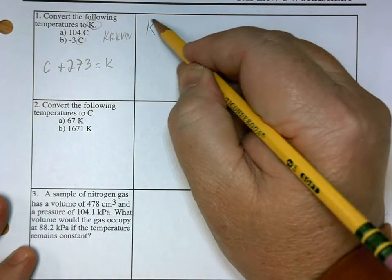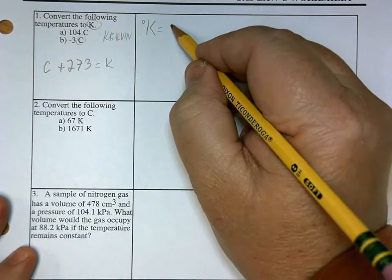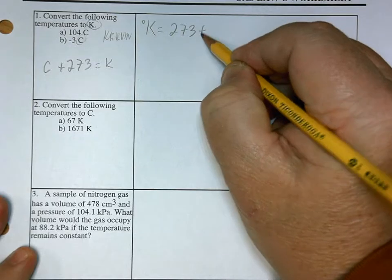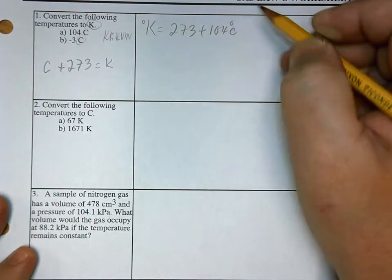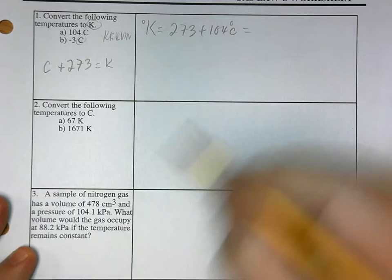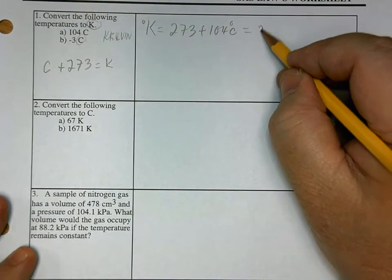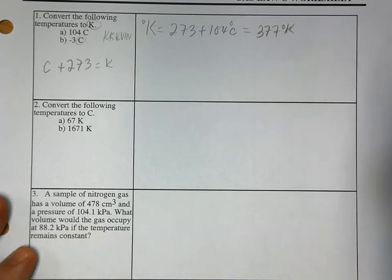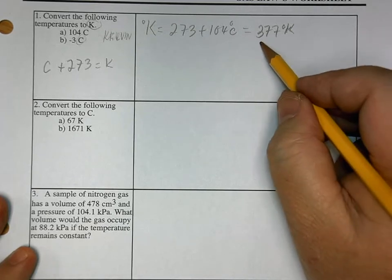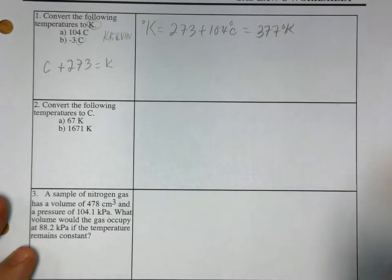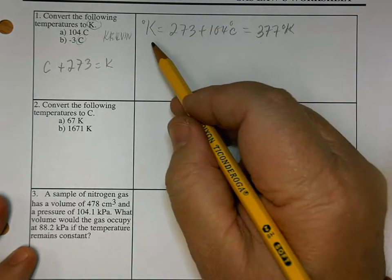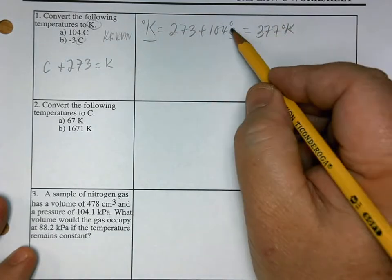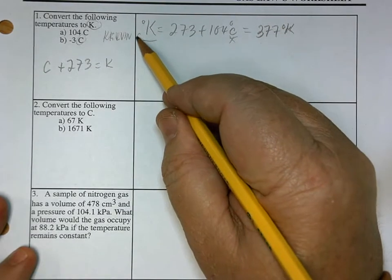So let's write that down. Degrees Kelvin is, you write this one first, 273 plus degrees centigrade is equal to degrees Kelvin. That's A.